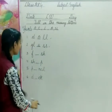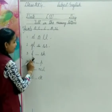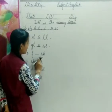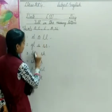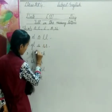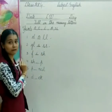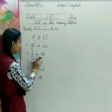F dash S-H. Toh yeh yahan pe kya aana chahiye? F dash S-H. Now, I. Okay, here I aayega. I. Toh, our word is fish. Okay, the new word is fish.